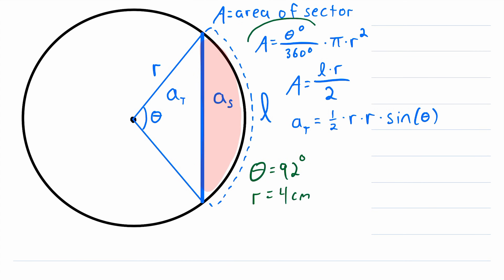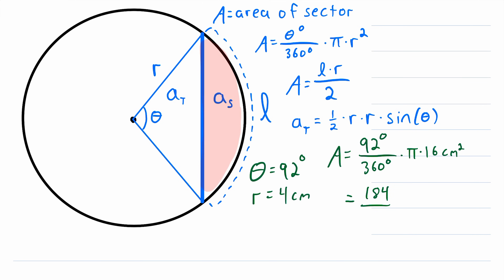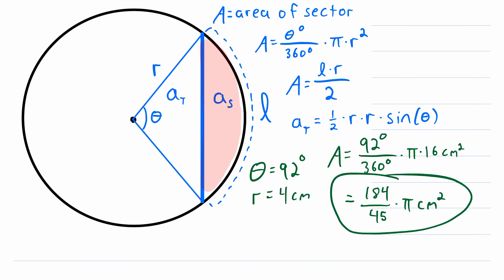Since we have the angle measure, to find the area of the sector we will use the degree formula. The area of the sector A equals 92 degrees divided by 360 degrees, multiplied by pi, multiplied by the radius squared. The radius is 4 centimeters, so the radius squared is 16 centimeters squared. The degree units cancel, and reducing 92 over 360 times 16 gives us 184 divided by 45, multiplied by pi centimeters squared.